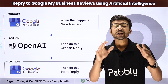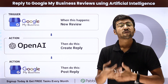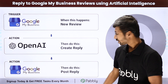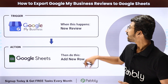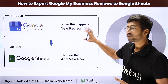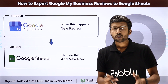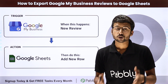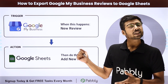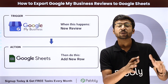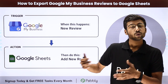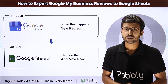We will also automatically post that reply for the same review, completely automating the process of replying to reviews. Moving ahead to our next automation idea: exporting our Google Map Business reviews into a Google Sheet. Tracking and managing all of your reviews on Google Map Business can be hectic, but using this automation you can export all the reviews you get into a Google Sheet in real time.